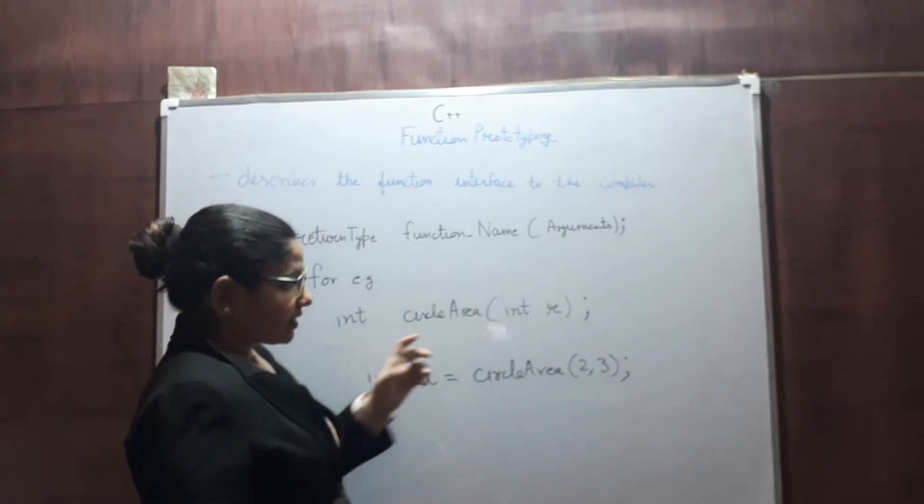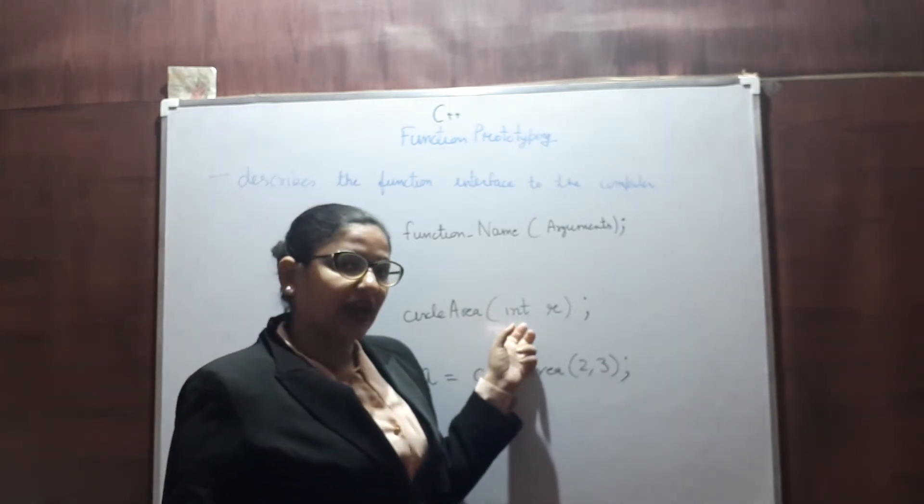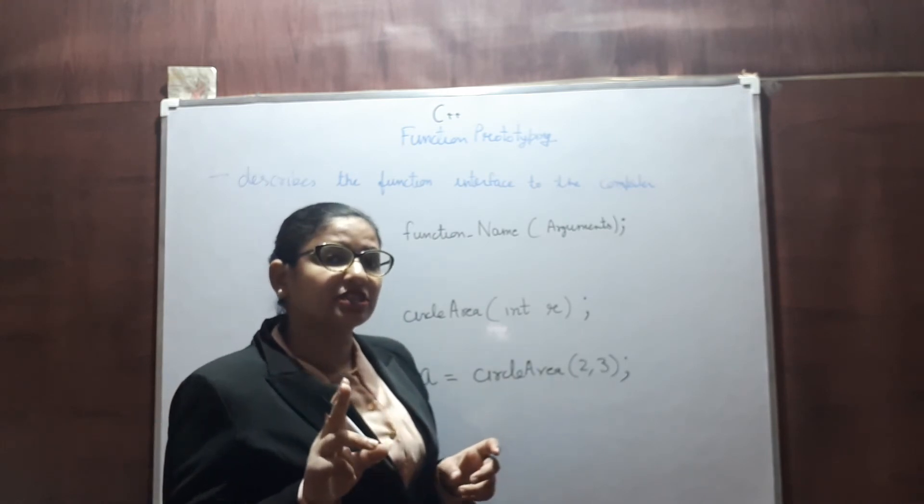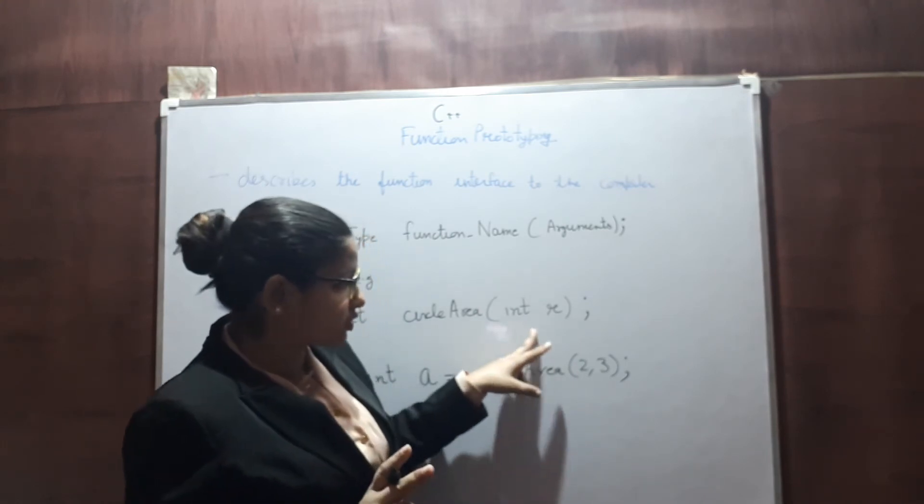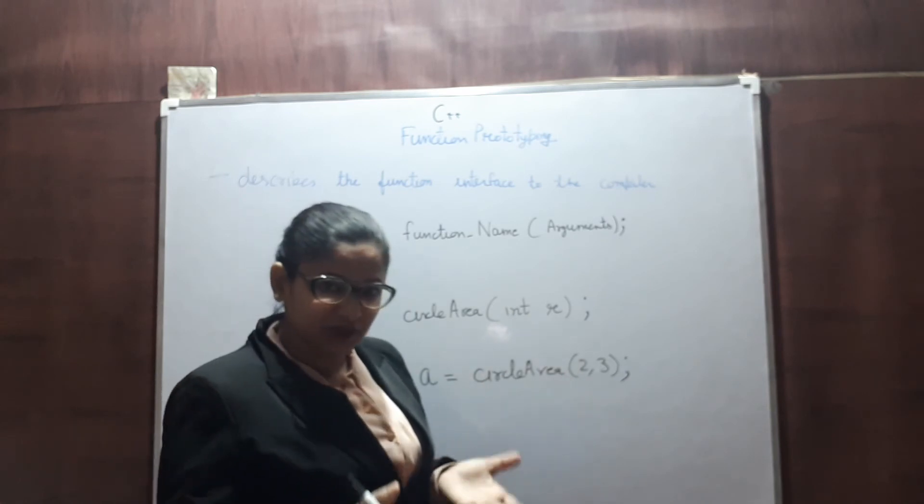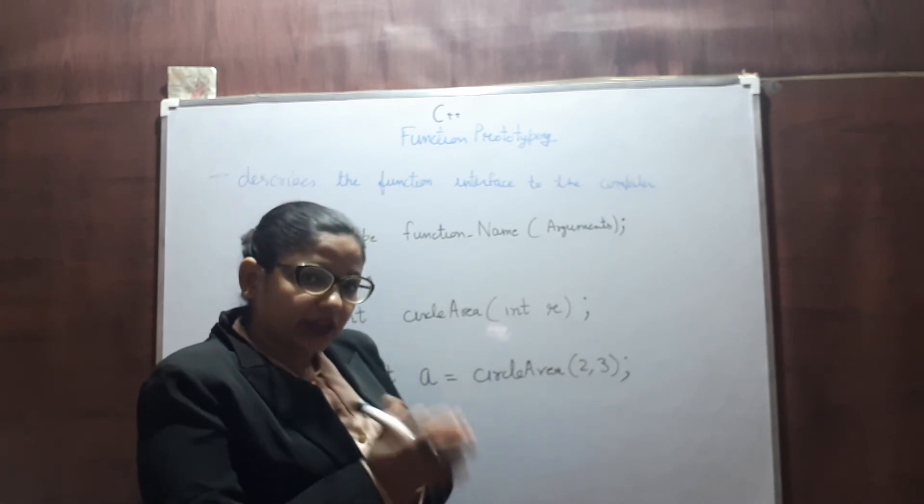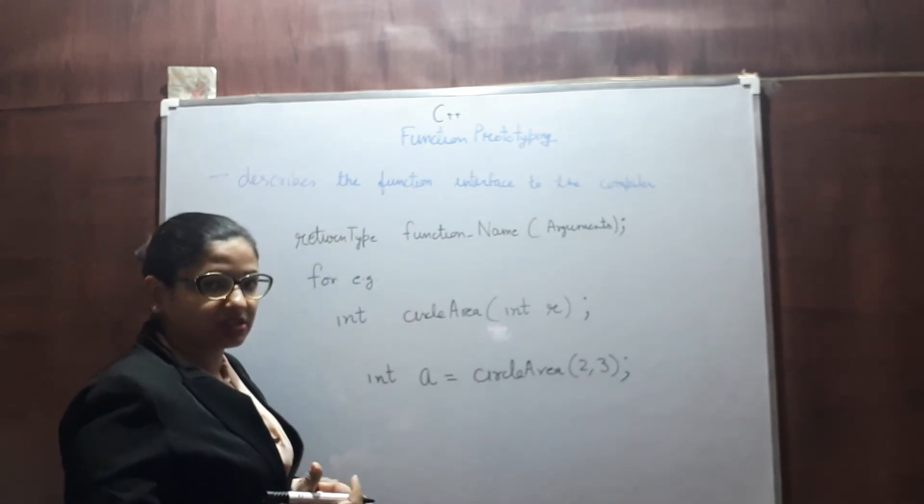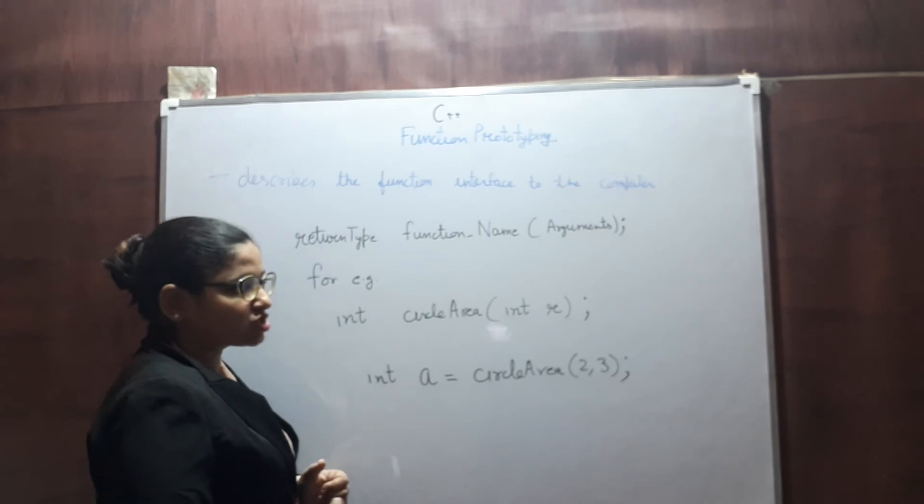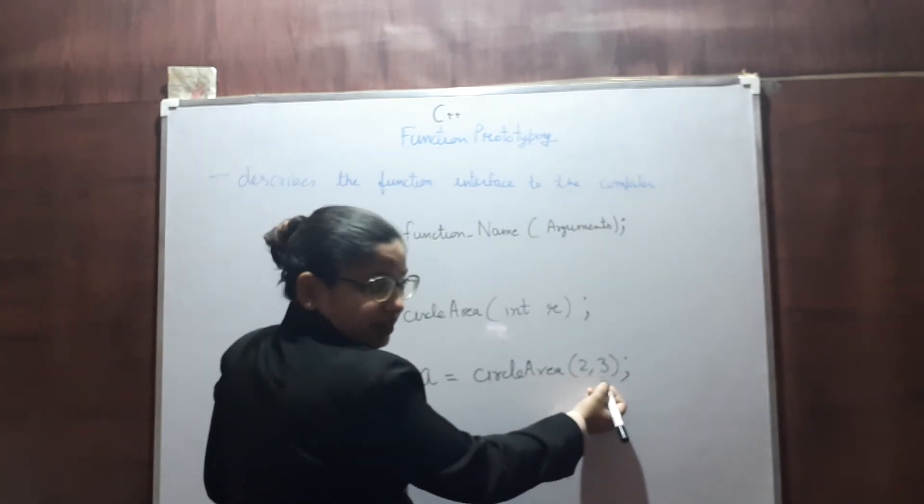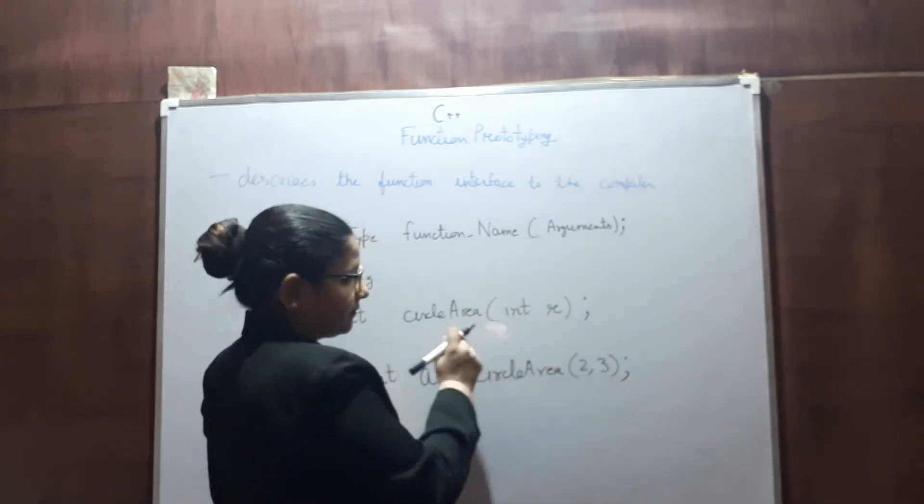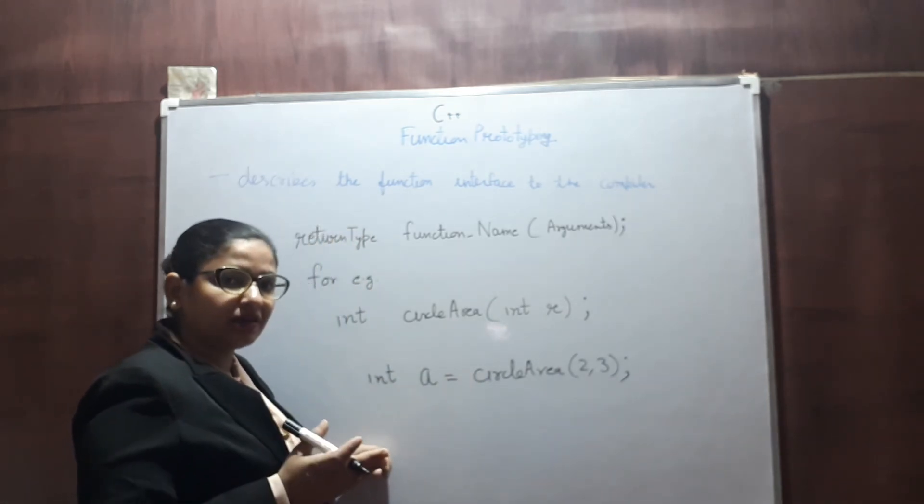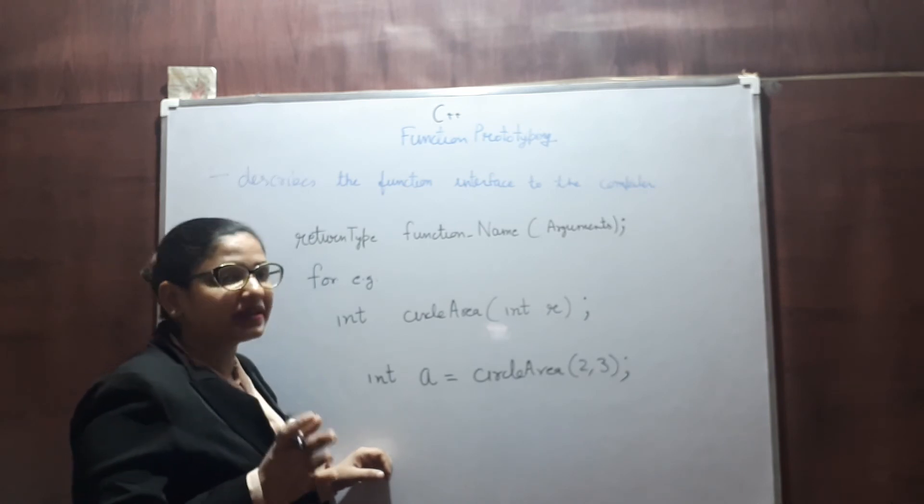As you can see, in the prototype we are having just single input argument, but in the calling function we are passing 2 values. So this is a mismatch. Your compiler uses prototype to find out mismatch. If there is any mismatch in calling function arguments and in function prototype, your compiler raises an issue immediately.